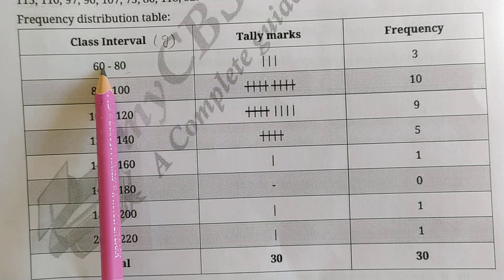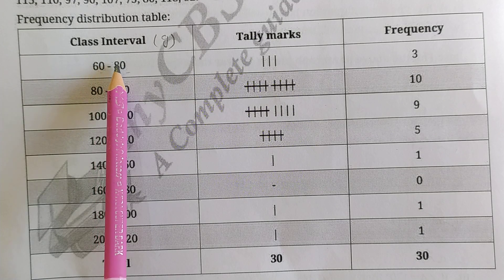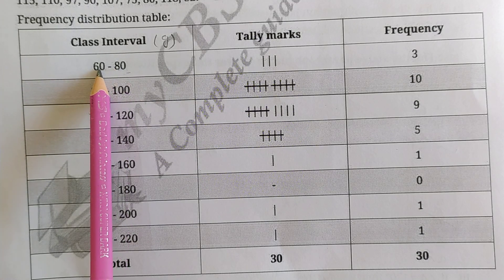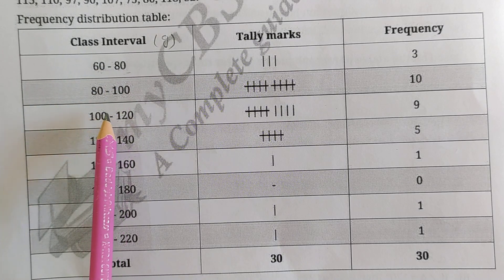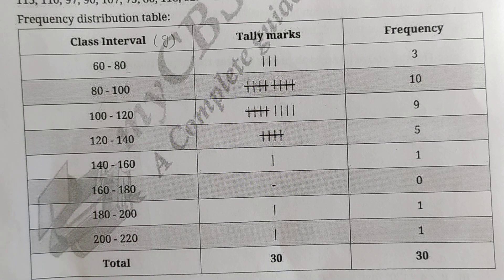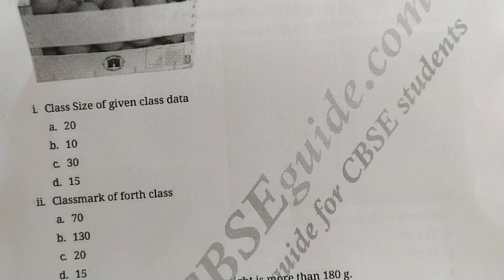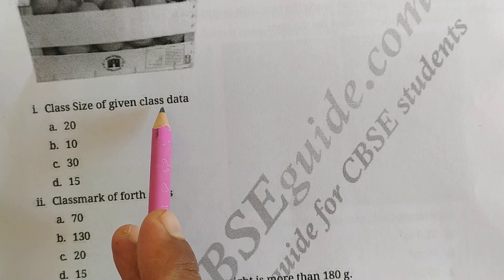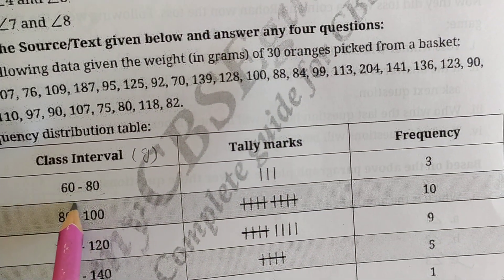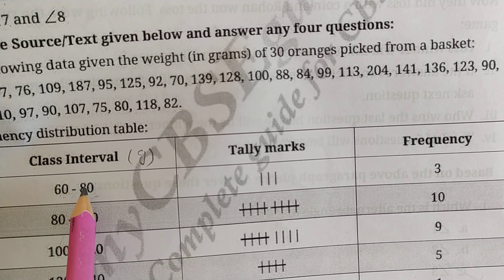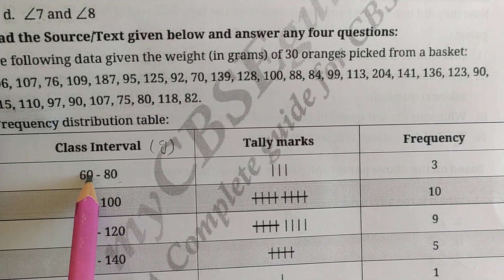The class size of the given data is 20, because the difference between the upper limit and lower limit of each class interval is 20. For example, in the first class interval, the upper limit minus the lower limit equals 20.